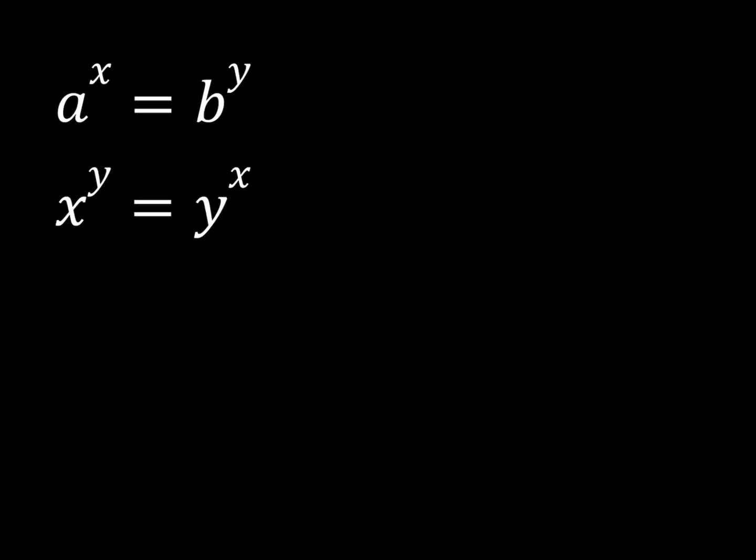We have a to the power x equals b to the power y and x to the power y equals y to the power x. a and b are given numbers or parameters and we are also told that a does not equal b, a does not equal 1, b does not equal 1.